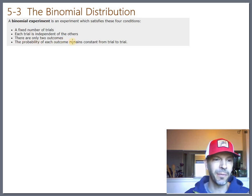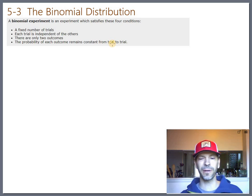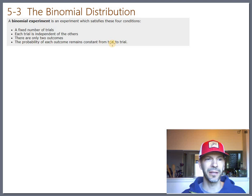And then the probability of each outcome remains constant from trial to trial. So you don't want to flip your coin that's 50-50 and then shave a little bit of metal off your coin, drill it out a little bit. And the next time you flip it, it's like 53-47 or something. So as long as those four conditions are met, you do have a binomial probability distribution.